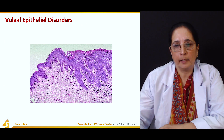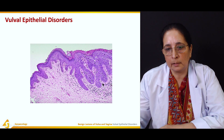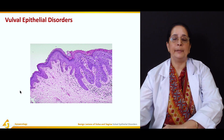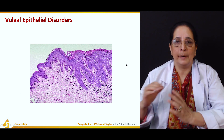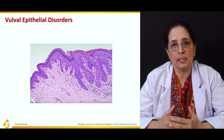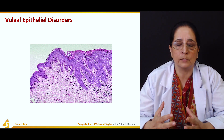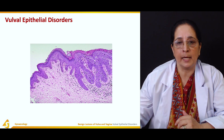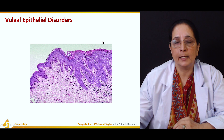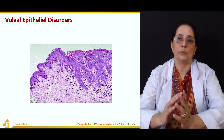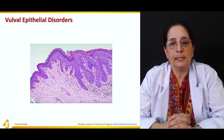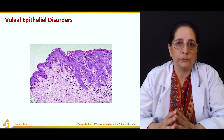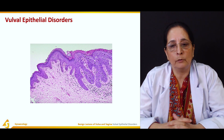In this first diagram, we see the vulva epithelial disorder showing different atypical changes in the vulva epithelium. The epithelium of the vulva is made up of four layers: the stratum basale, stratum corneum, stratum spinosum, and stratum granulosum. Some special cells are also present in the vulva epithelium: Merkel cells, melanocytes, and Langerhans cells.